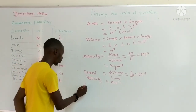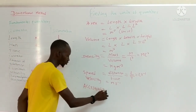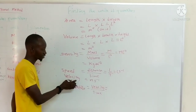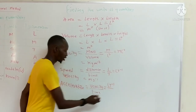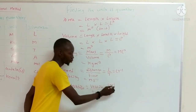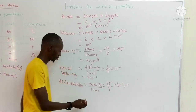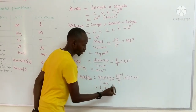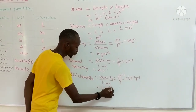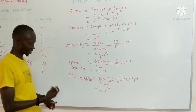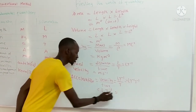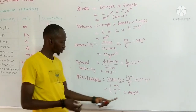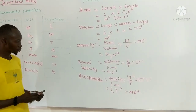We consider another quantity which we refer to as acceleration. Acceleration is measured as velocity divided by time. The dimension of velocity we have here already as LT⁻¹, and the dimension of time is T. If this T is moved up, we have LT⁻¹ · T⁻¹. Since they are the same base, we add their powers: minus 1 plus minus 1 gives minus 2. So the dimension of acceleration is LT⁻². The unit of length is metres and time is seconds, so the unit of acceleration is metres per second squared (m·s⁻²).